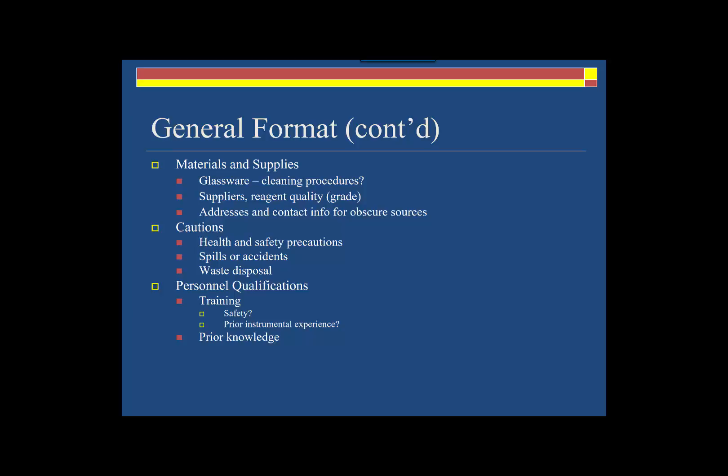The next section outlines the qualifications for any individuals executing the protocol. If there are peculiar training requirements, such as experience with radioactivity, then these training requirements should be listed. If prior knowledge or experience with a specific analytical instrument is required, then this information needs to be included. For example, if you are going to be working with air-sensitive reagents and skill in Schlenk line work is required, then that training or experience should be listed here as well.